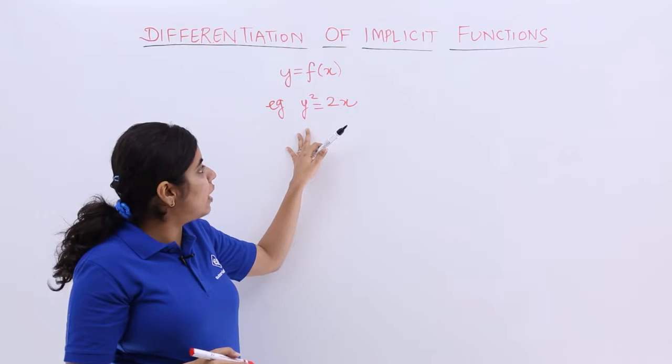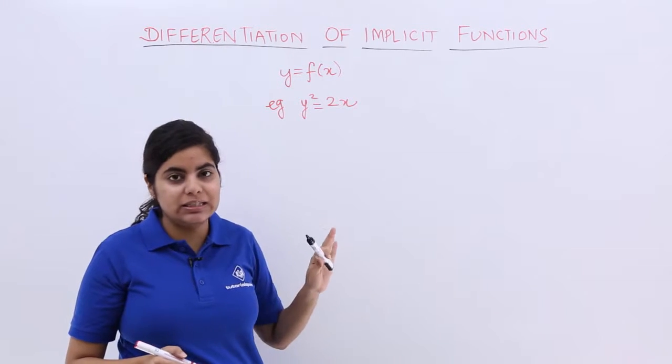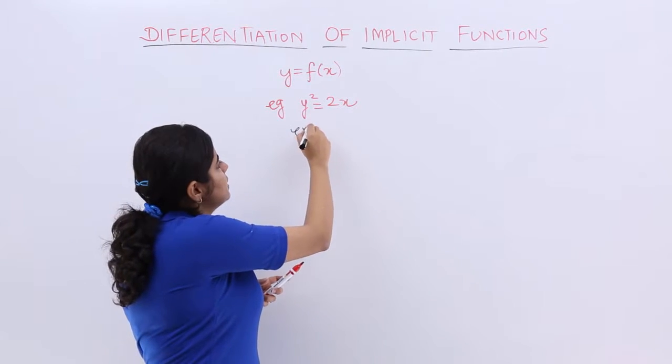So if this is there, you see that y is separated, x is separated. This is called as the explicit category.